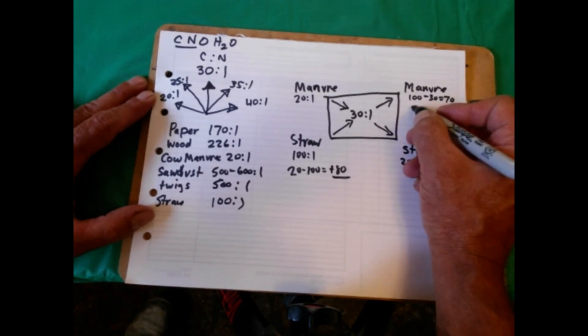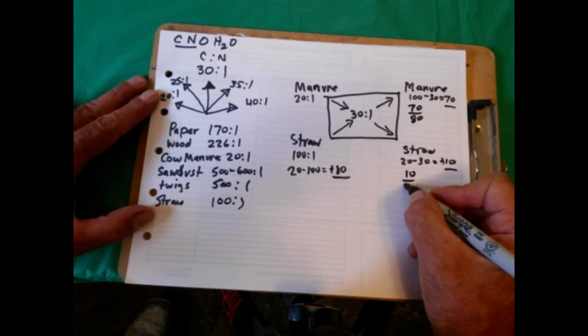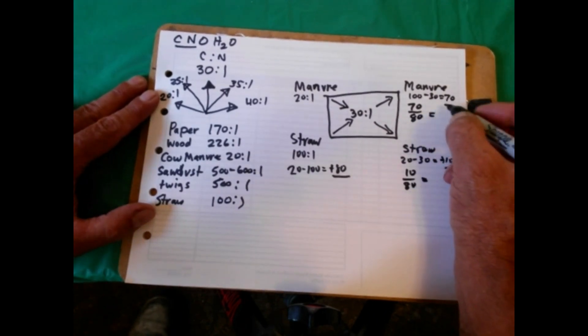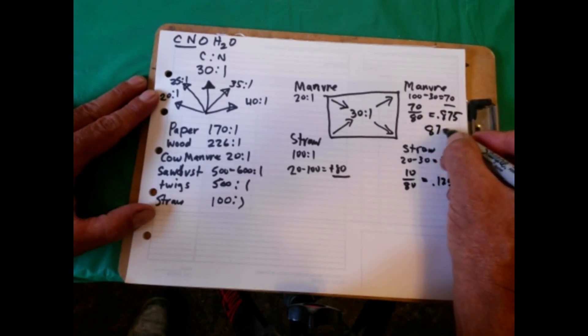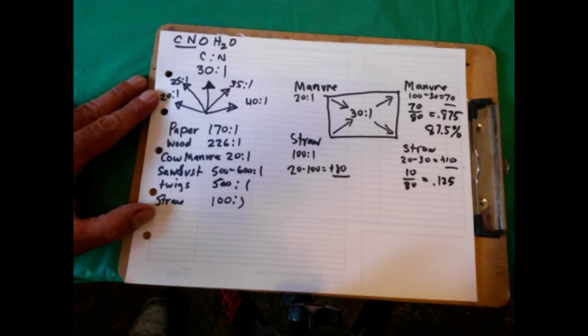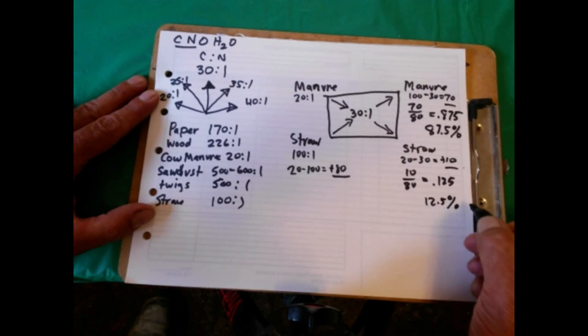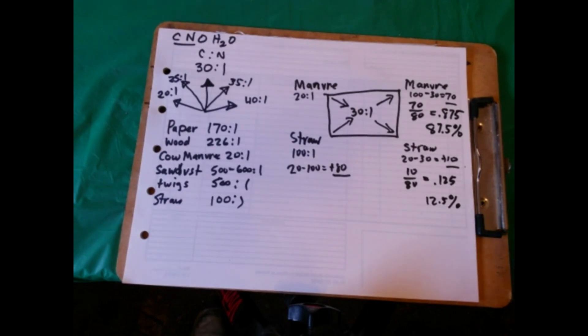Your ratio is going to look like this: 70 over 80 for manure and 10 over 80 for straw. This is exactly 0.875 and this is 0.125. So 87.5% of your mixture is going to be manure and 12.5% of your mixture is going to be straw. That will give you really close to 30 to 1 ratio that you need to make your pile fire up hot.